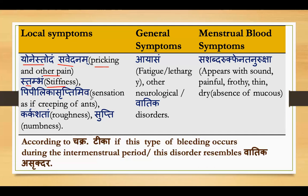Pipilika Supti means sensation as if ants are creeping — this is a nerve-related symptom. People sometimes experience this when sitting for a prolonged time or when pressure is applied to a body part, causing mild numbness along with a crawling sensation. Then Karkashata means roughness, specifically in the vagina. Supti means numbness, that is, loss of sensation.